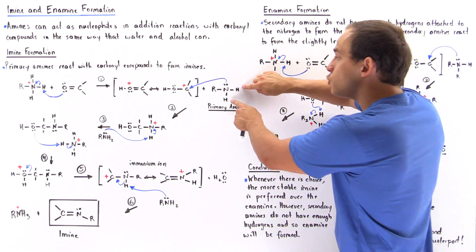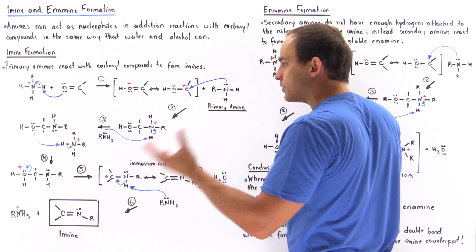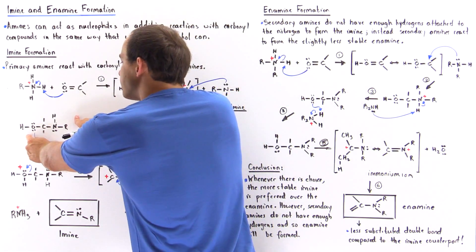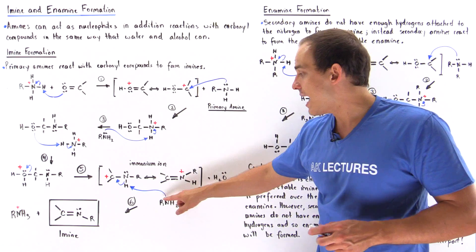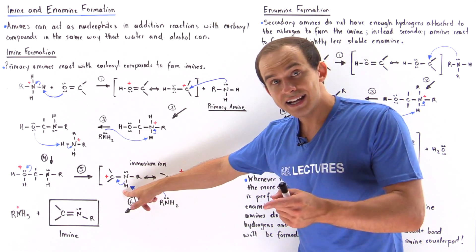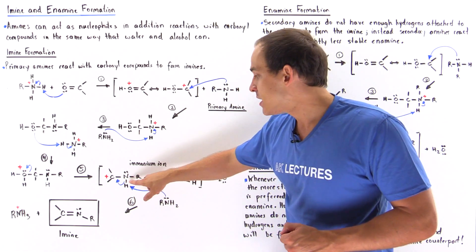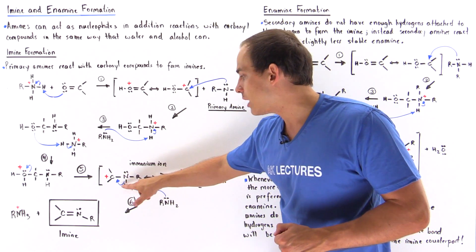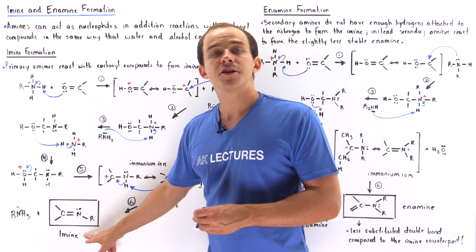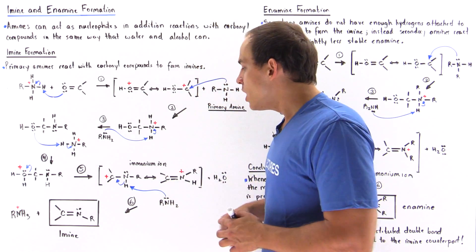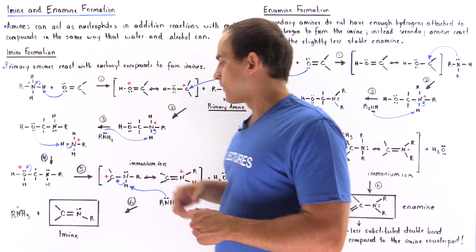In the final step, the primary amine formed in step four uses its lone pair of electrons to remove the final H atom attached to the nitrogen on this iminium ion. Remember, we started with two H atoms on nitrogen. In the first deprotonation step, one H atom was removed. In the second deprotonation step — step six — this primary amine takes away the second H atom, forming a double bond between carbon and nitrogen. This final product is known as the imine, and we also regenerate the acid we began with in step one.